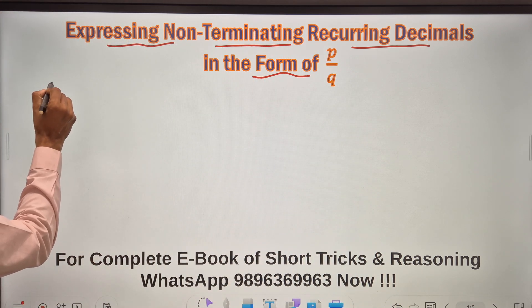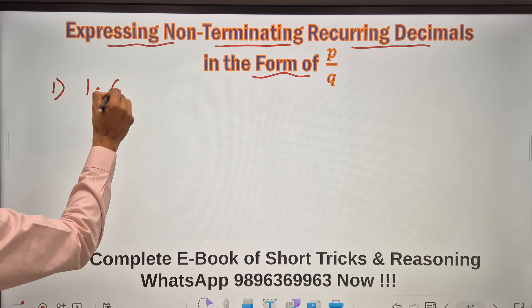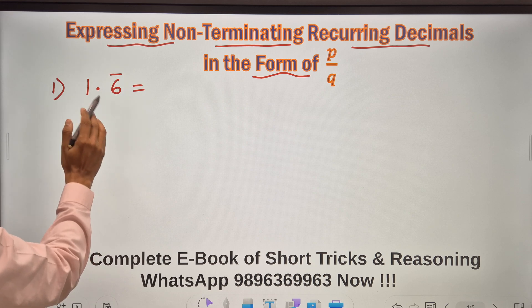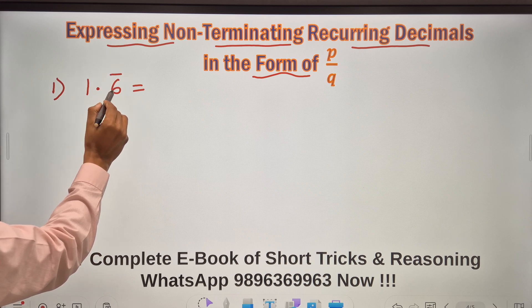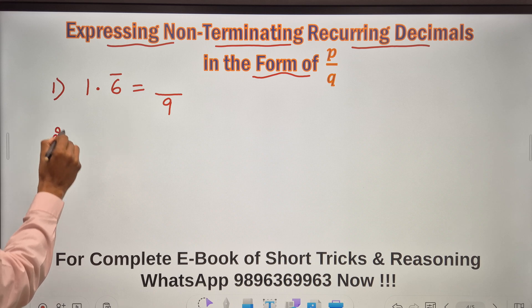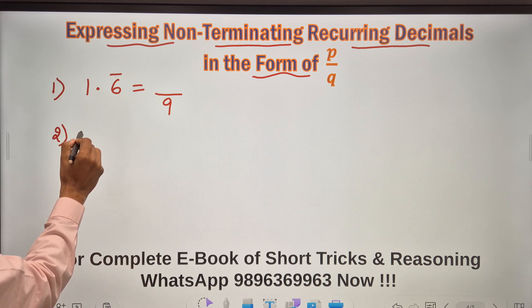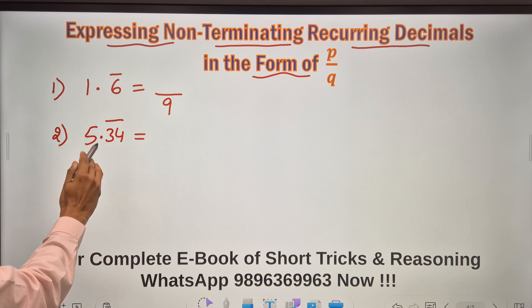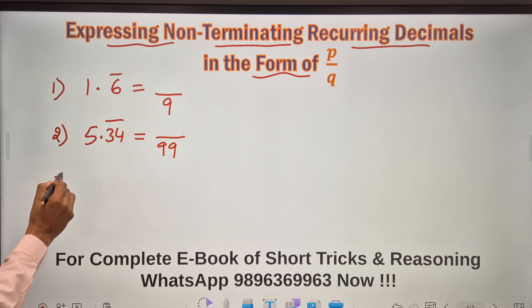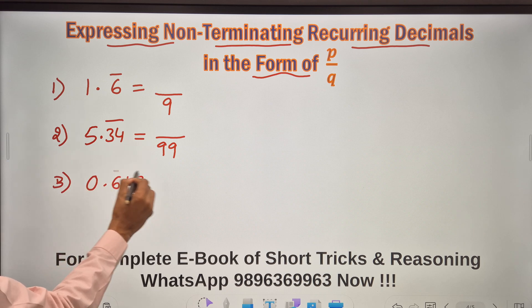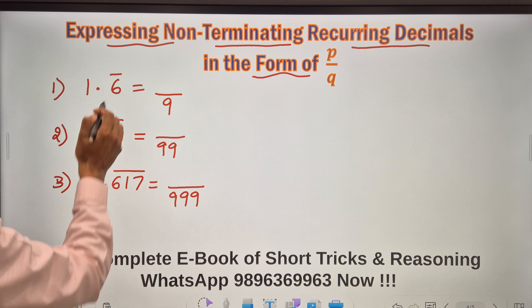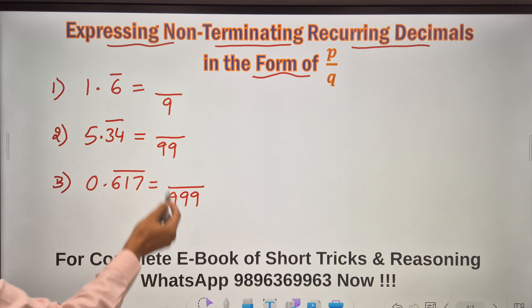For that, let me take up the first question, which is like say I will take an easy one first: 1.6 bar. Now 1.6 bar has one digit which is repeating, and there is nothing which is not repeating. So whenever there is one digit repeating after decimal, the denominator will have one 9. Similarly, if you have two digits repeating, let me just take one more question. If you have 5.34 bar, here you can see after decimal everything is repeating and there are two digits which are repeating. So I will put two 9s in the denominator. So that is the first concept. When everything after decimal repeats, you have to check how many digits are repeating and put equivalent number of 9s in the denominator.